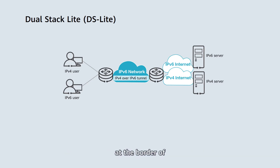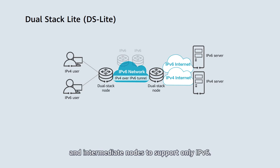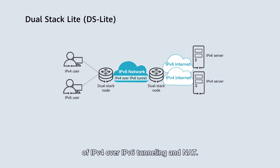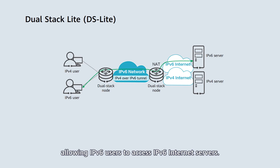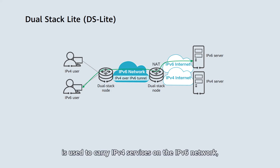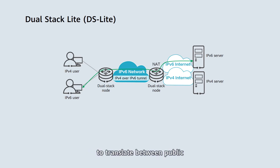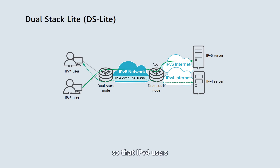DS-Lite requires only devices at the border of IPv4 and IPv6 networks to support dual stack, and intermediate nodes to support only IPv6. DS-Lite is a combination of IPv4-over-IPv6 tunneling and NAT. IPv6 networks can directly carry IPv6 services, allowing IPv6 users to access IPv6 internet servers. IPv4-over-IPv6 tunneling is used to carry IPv4 services on the IPv6 network, and NAT is performed on the CGN devices to translate between public and private network addresses, so that IPv4 users can traverse the IPv6 network to access IPv4 internet servers.